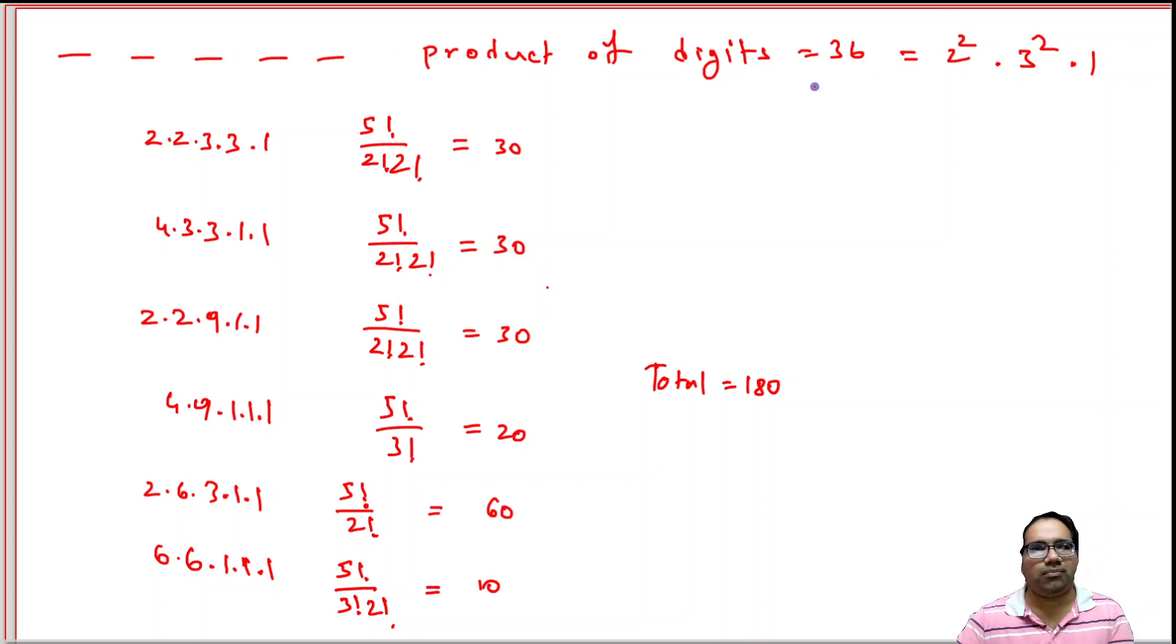That means we can take both 2s and both 3s and one 1. We will make it 5. Or we can combine both the 2s into 4 and we can keep the 3s as is. That is another option. Or we can combine both the 3s and keep the 2s separately. That is 2 × 2 × 9.